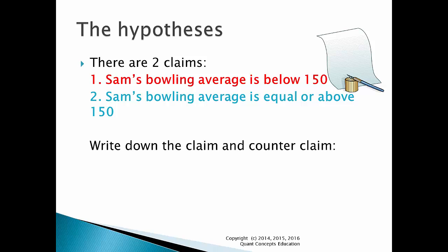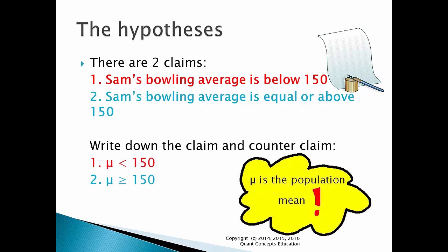Now let's write down these claims formally. The first one is that Sam's true bowling average is below 150. The second claim is that Sam's true bowling average is 150 or above. Mu, which looks like a U, represents the population mean or population average. This is the true average that we cannot observe — we will never really know Sam's true bowling average because we haven't seen every single game of bowling he has played in his entire life.